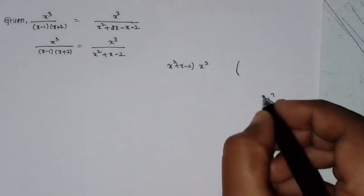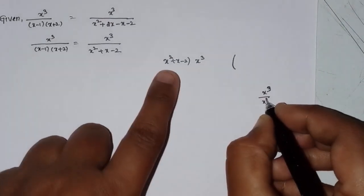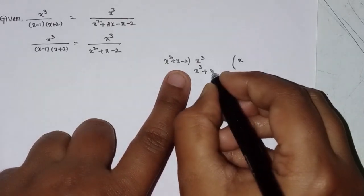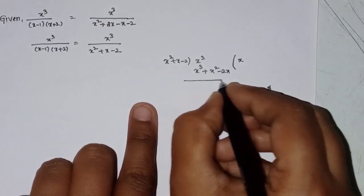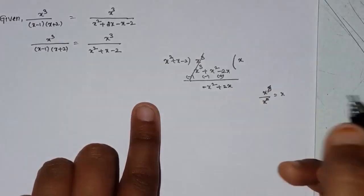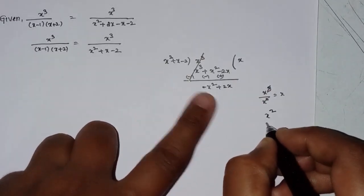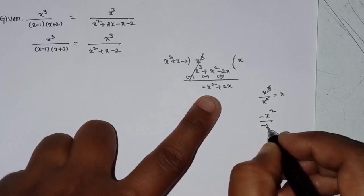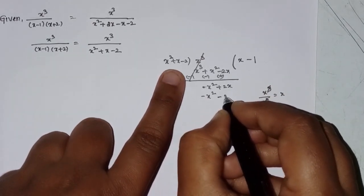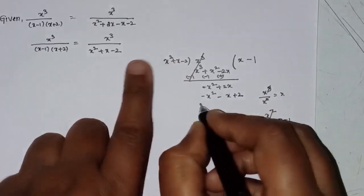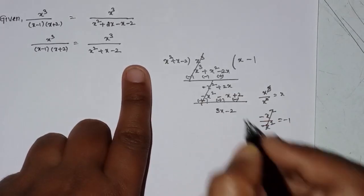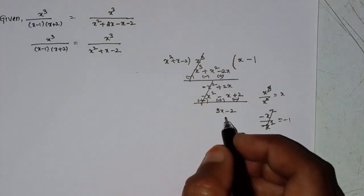Dividing x squared plus x minus 2 into x cube: x cube divided by x squared gives x. Multiply back and subtract: we get minus x squared minus x plus 2. After cancellation, the remainder is 3x minus 2.